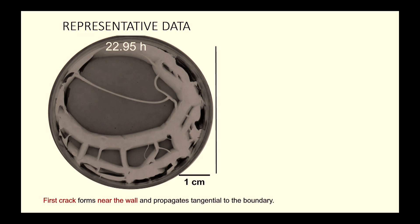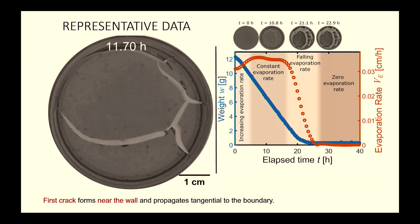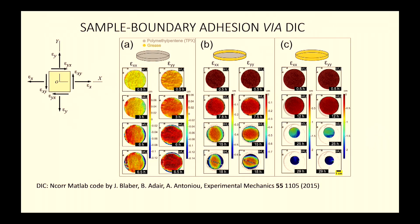Snapshots from imaging and weight-versus-time data on a weighing balance show a constant evaporation rate zone. All crack formation data, including the first crack appearance, occurs within the constant evaporation rate regime. Digital image correlation (DIC) using pepper powder as tracers and the NCORE MATLAB code calculates strain fields from successive images of the drying petri dish.